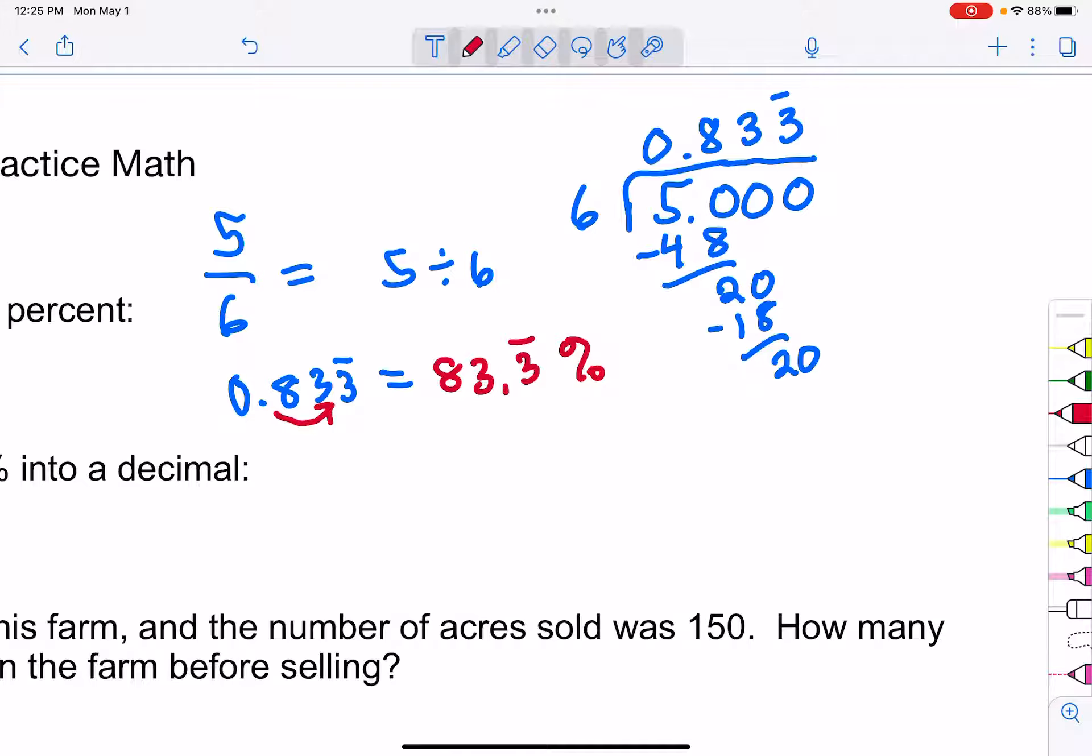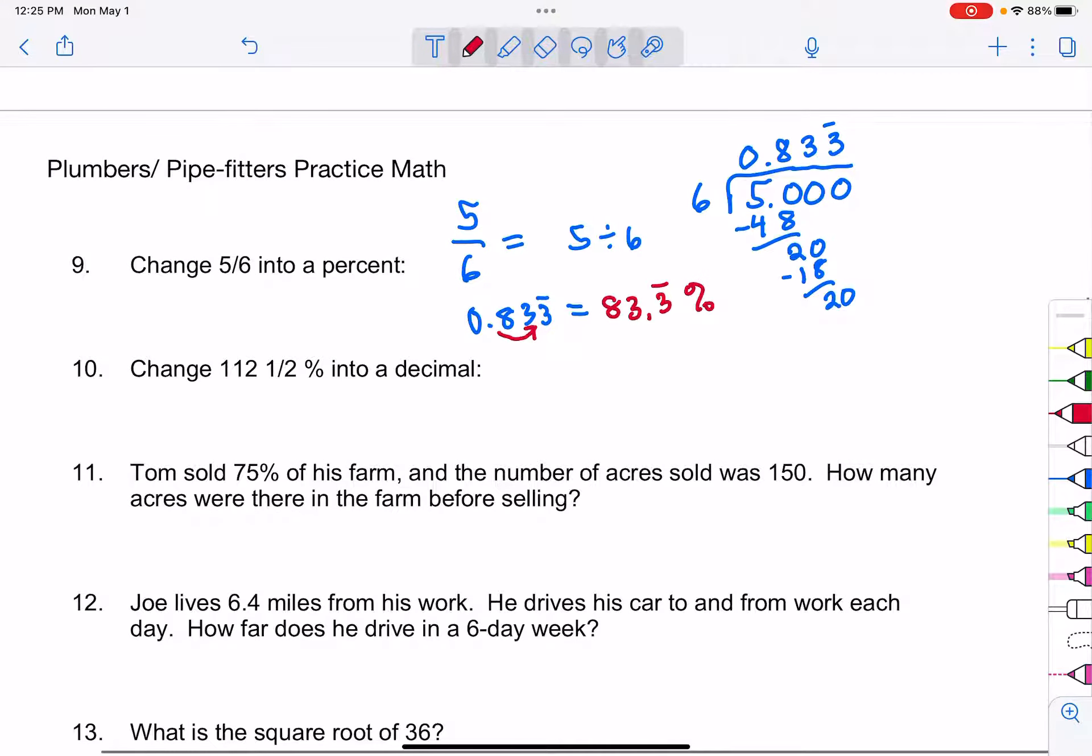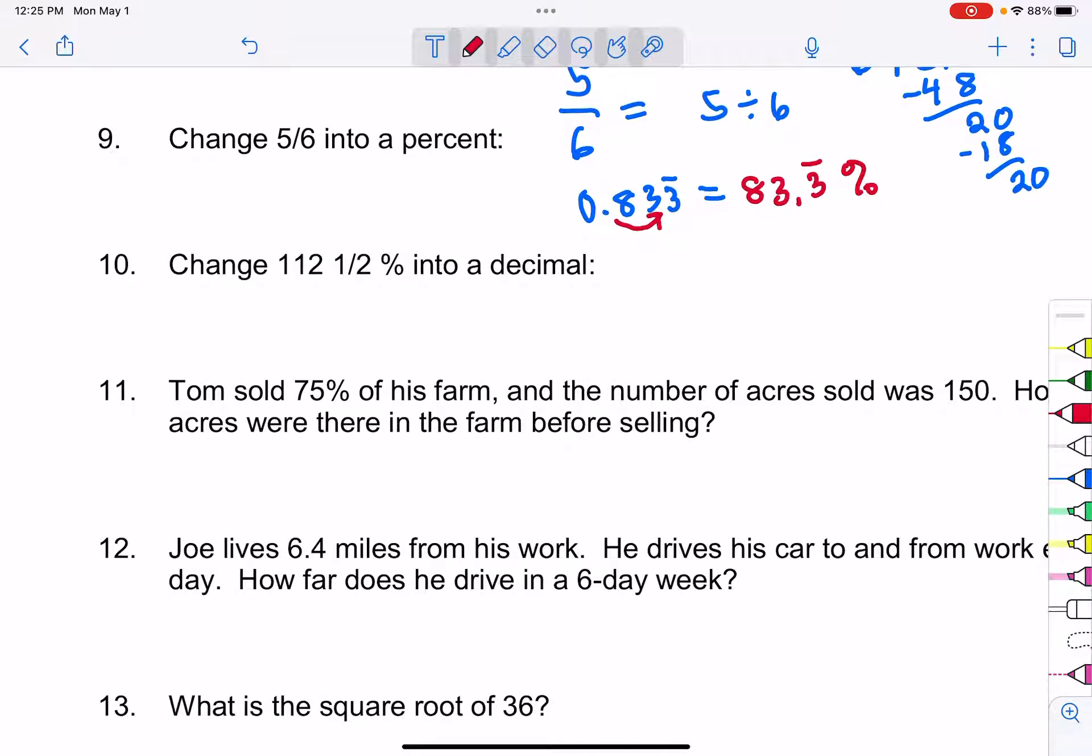Now we're going to go the opposite way for number 10. It says to change the percentage 112 and a half percent into a decimal. Now 112 and a half percent we're going to write as 112.5. A half is a common fraction, you want to know that one half is 0.5 without even thinking about it. You want to know one half is 0.5, one fourth is 0.25. There's some common fractions that are very very important.